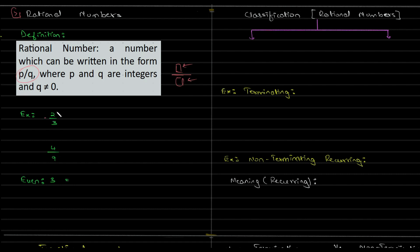Example is 2 by 3, where 2 is your numerator and 3 is your denominator. 4 by 9, 4 is your numerator and 9 is your denominator. Even the number 3, or 4, can be written in the form of a numerator divided by a denominator.